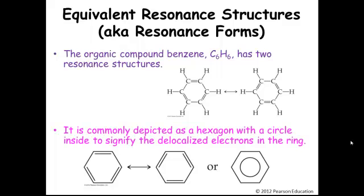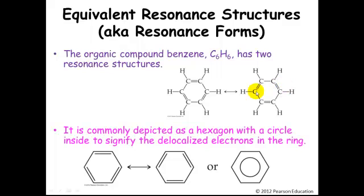Same thing for benzene. We can draw two Lewis structures — completely equivalent, each with three single bonds and three double bonds. To show this resonance, we can draw a skeletal structure where each point is a carbon atom and show them as resonance forms. As a shortcut, chemists tend to just put a circle in there to show that the electrons are delocalized over the whole area. In this molecule, the electrons are equally smeared among all of the carbons, and that's what the circle is trying to show us.